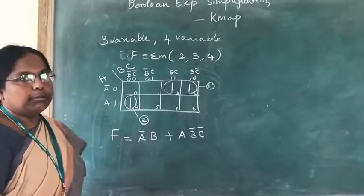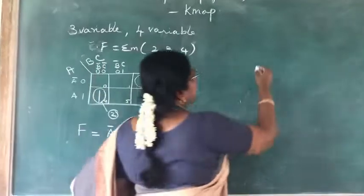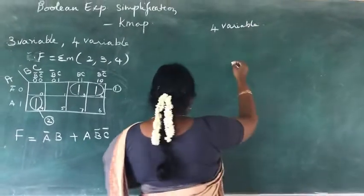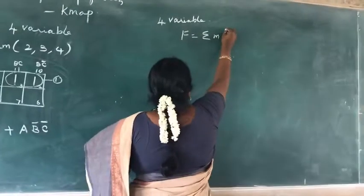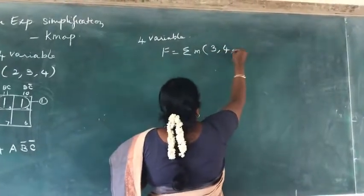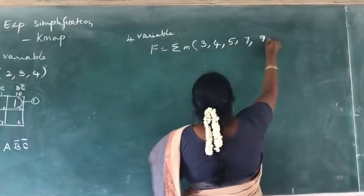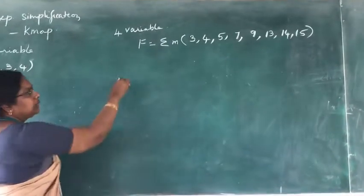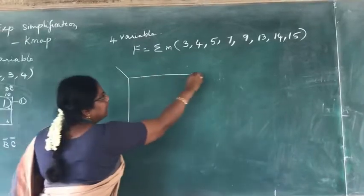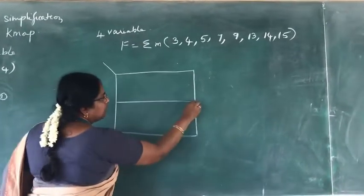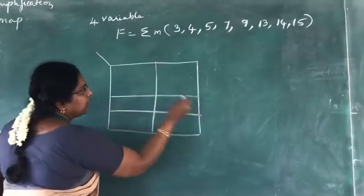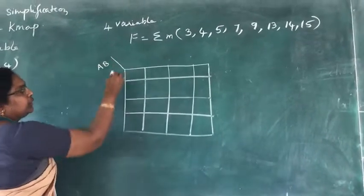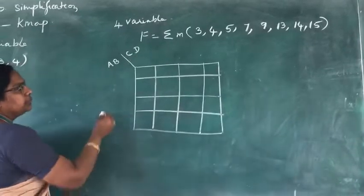This is an example of a three-variable K-map. Now we will see an example of a four-variable K-map. The function F equals the summation of min terms 3, 4, 5, 7, 9, 13, 14, and 15. Since we have four variables, the K-map will have 16 cells, with two variables along the rows and two along the columns.